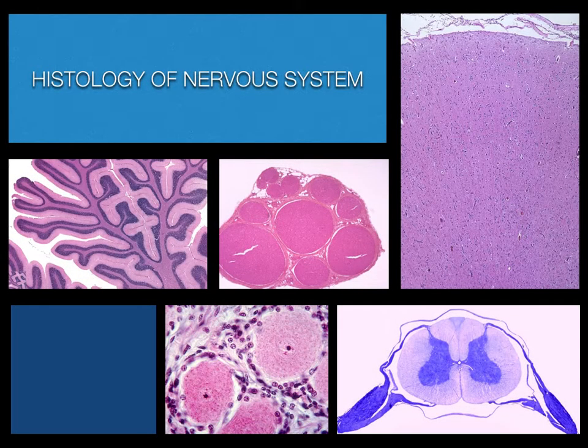The organs of the nervous system you will be studying today include cerebrum, cerebellum, spinal cord, dorsal root ganglion, and peripheral nerve.